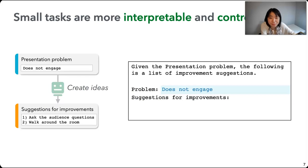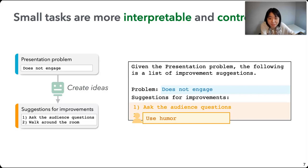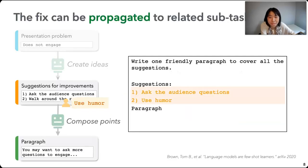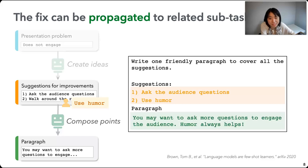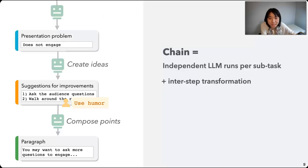So instead of rewriting a full paragraph, if we just ask for suggestions on a single problem like 'does not engage,' we can get very explicit suggestions like 'ask the audience questions' or 'walk around the room.' End users can then come in and say, 'I don't want that because I cannot walk around during a pandemic,' and keep iterating until they're happy — maybe landing on something like 'use humor.' Then if we pass this human-refined suggestion to another large language model that specifically focuses on rewriting suggestion bullet points into friendly paragraphs, we get a better result. Packing these together, we have a chain — we ask large language models to complete each subtask separately and use the output of one step as the input for the next, so the final result aggregates results from previous runs.